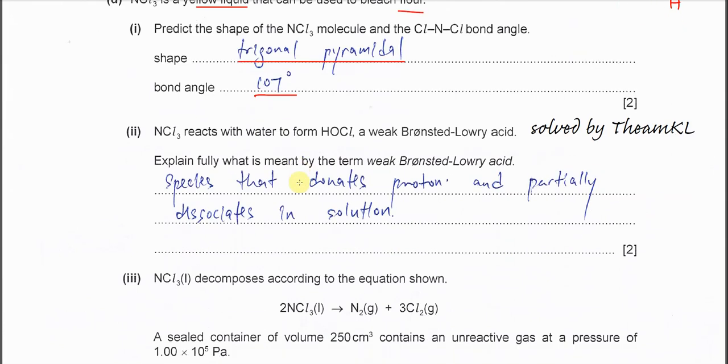Part 2: NCl3 reacts with water to form HOCl, a weak Bronsted-Lowry acid. Explain fully what is meant by the terms weak Bronsted-Lowry acid. You have to explain these two terms: acid and weak acid. For this one, we try to explain Bronsted-Lowry acid first. The species that donates proton. If a species is able to donate proton, that's what we call Bronsted-Lowry acid. And weak means partially dissociate or ionized. So this acid is just partially dissociated in solution, forming a very small amount of H+.